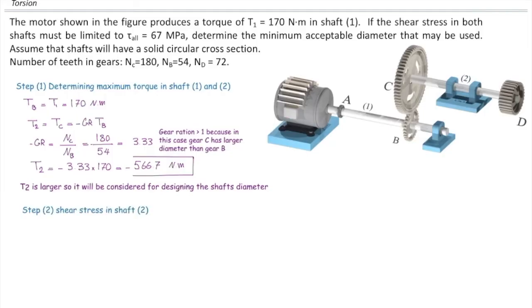Now, I simply apply the design equation, which is shear stress Tc over J should be smaller than the allowable shear stress. Let's plug the values. Torque is given to be 566.7 Nm. Sign doesn't matter, so I work with the absolute value. But I need to convert that into Nmm by multiplying that by 1000.